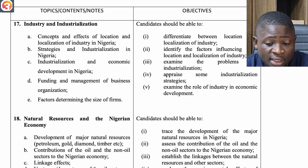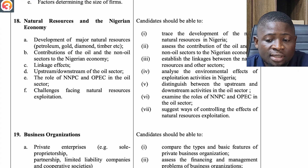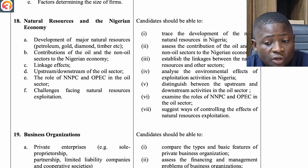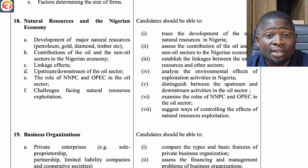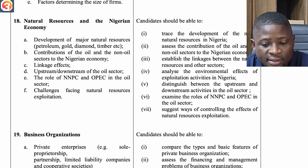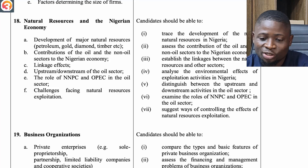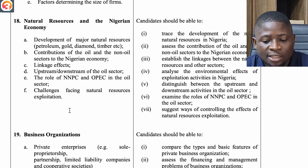Also under Topic 17: funding and management of business organizations and factors determining the size of firms. The eighteenth topic is Natural Resources and the Nigerian Economy — development of major natural resources: petroleum, gold, diamond and timber; contributions of the oil and non-oil sectors to the Nigerian economy; linkage effects; upstream and downstream aspects of the oil sector; and the role of NNPC and OPEC in the oil sector; and challenges facing natural resources exploitation.